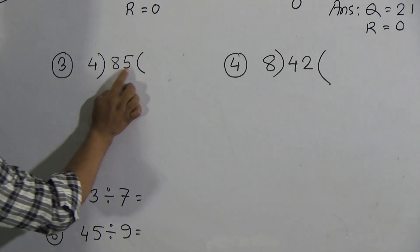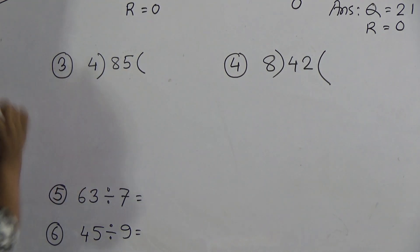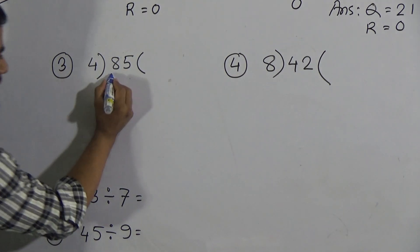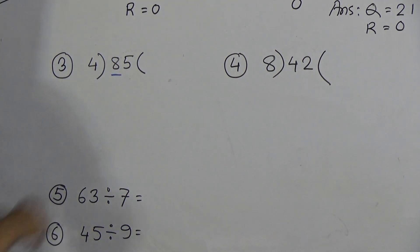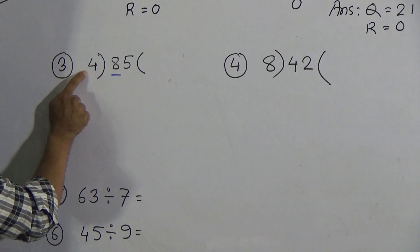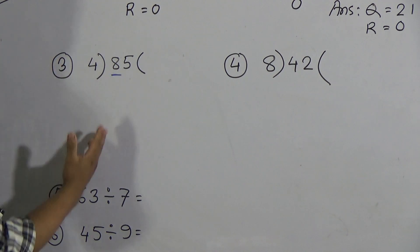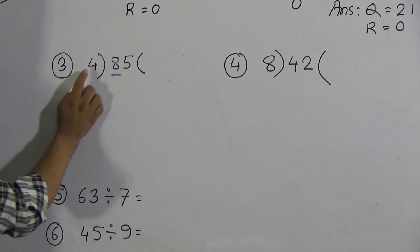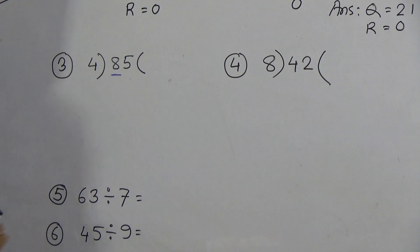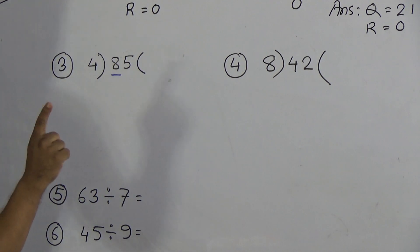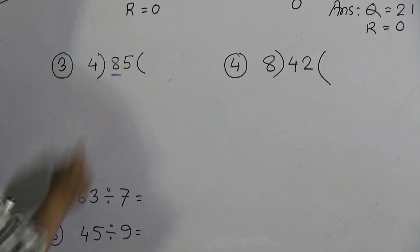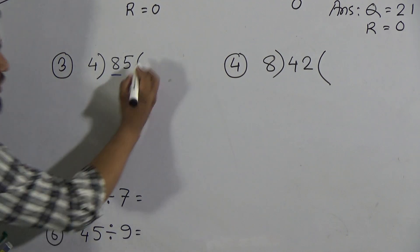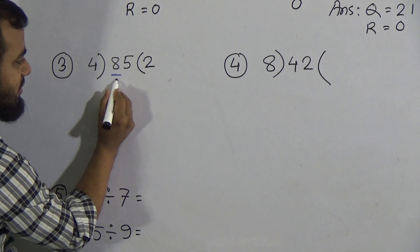Now let's solve question number 3. We need to divide 85 by 4. First, take only one digit — that means 8. Is 8 greater than 4? Yes, so we can divide. Count the times table of 4: 4 ones are 4, 4 twos are 8. We get 8, so write down 4 twos are 8.